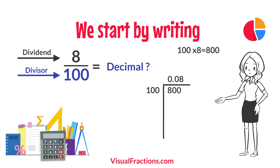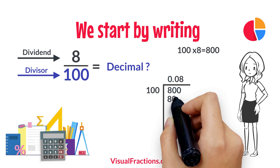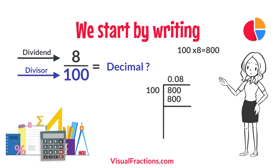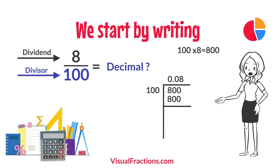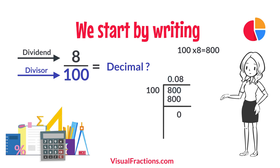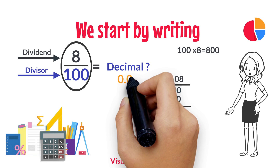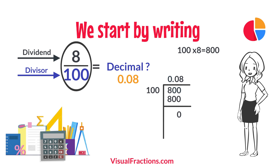Multiplying 8 by 100 gives us 800. When we subtract 800 from 800, we get a remainder of 0. So, there we have it — the fraction 8 100ths converted to a decimal is 0.08.